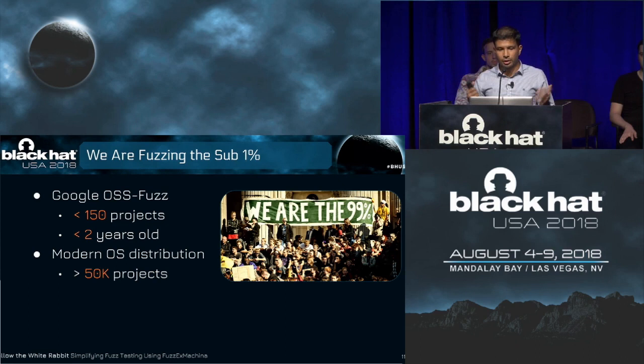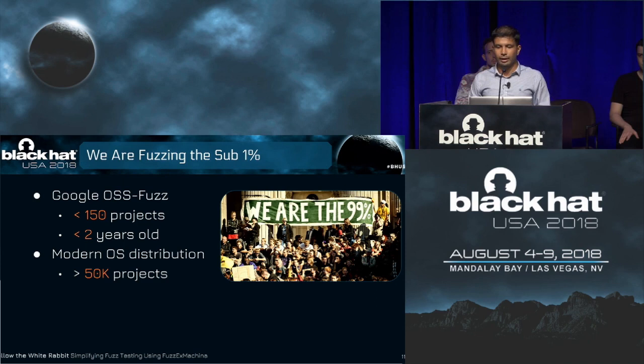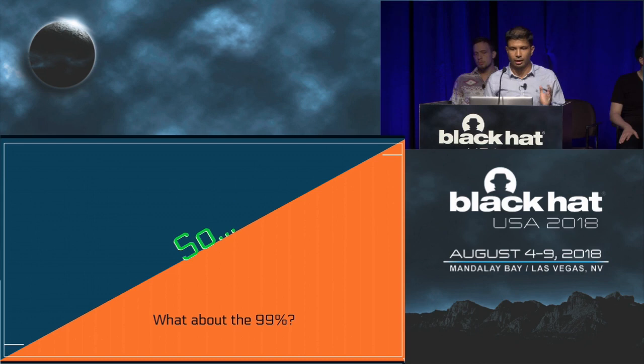Bear in mind that Google OSS Fuzz has been around for approximately two years now, so it's somewhat surprising that there are so few projects still, in spite of the fact that fuzzing toolchains have really made it easy for developers to test their code. The question is not that we're not fuzzing, but we're not fuzzing enough. We're not caring about the other 99% of software packages.